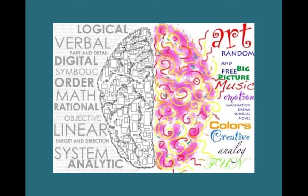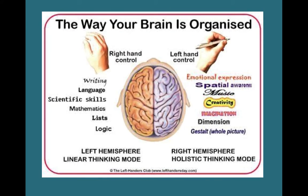The left side of the brain really controls a lot more of our language, logical order, and mathematical reasoning, whereas the right side of our brain really controls our creativity, randomness, and the emotional side of our being. This goes directly into how we create and make art.